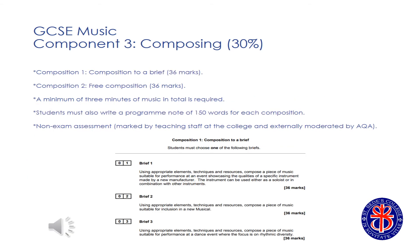For Component 3, composition, you will compose two pieces of music, lasting for a minimum of three minutes. Composition one is in response to a set brief, such as the examples below, which you will be set in year 11. Composition two is a free composition. You will start work on this composition in the summer term of year 10. You will also be expected to write a short programme note for each composition, in which you detail the intent of the work. Here is an example of a highly successful free composition.